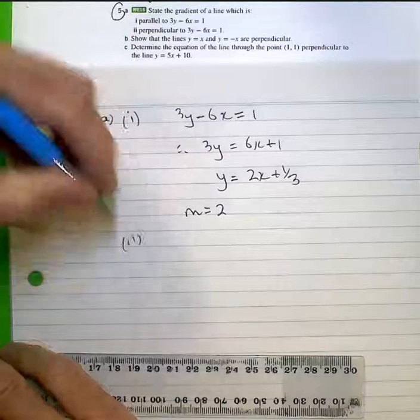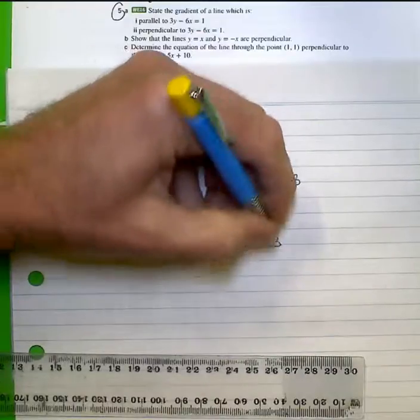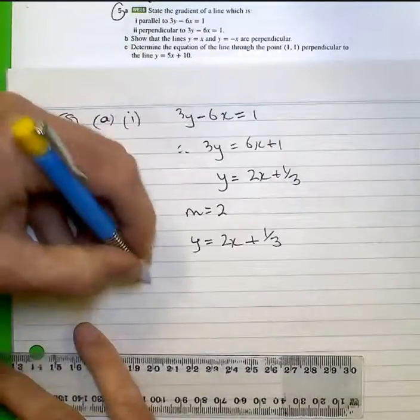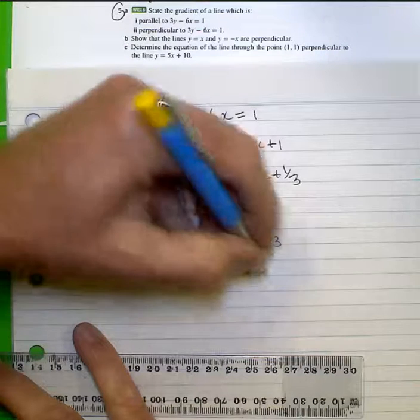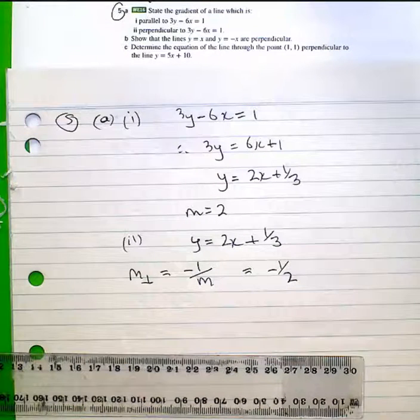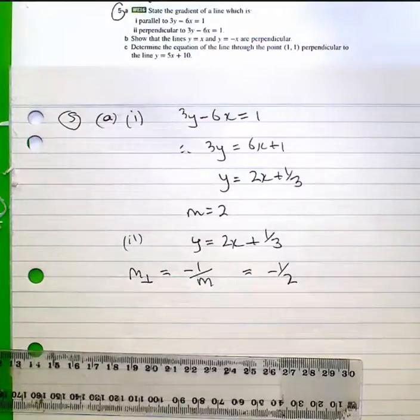Now in number 2, rearranging that or looking at it again, perpendicular occurs when it's negative 1 over the gradient or negative 1 half. So any function that has the gradient negative 1 half will be perpendicular to that.